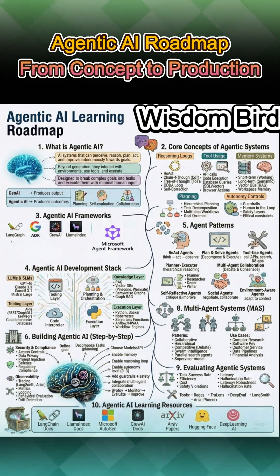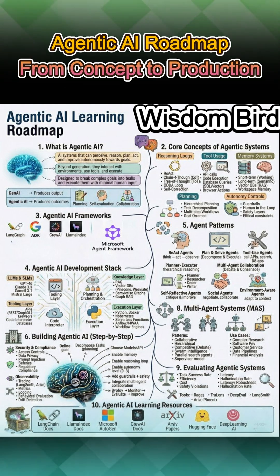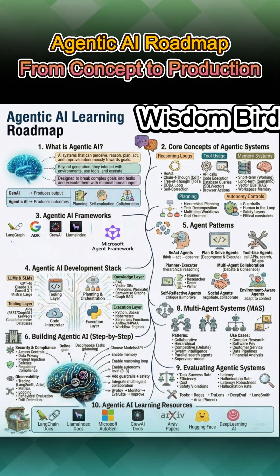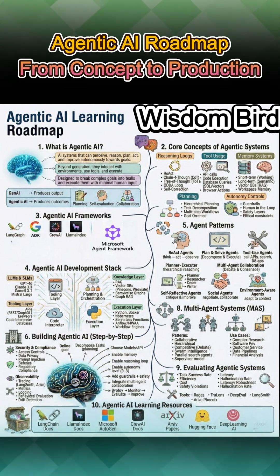Stop getting lost in the AI noise. Everyone's talking about agents, react loops, multi-agent systems, tool usage, but very few explain how it all fits together. If you're trying to move beyond basic LLM apps and build truly autonomous AI, you know the confusion is real. I've mapped the entire ecosystem end-to-end, and today I'm walking you through the complete agentic AI learning roadmap.